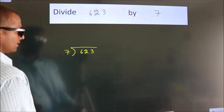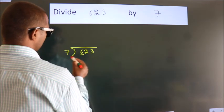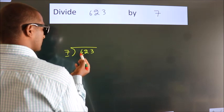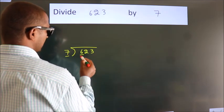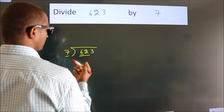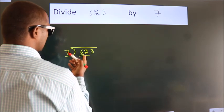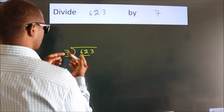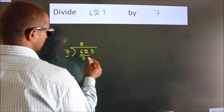Here we have 6, here 7. 6 is smaller than 7, so we should take two numbers, 62. A number close to 62 in 7 table is 7 times 8, 56.